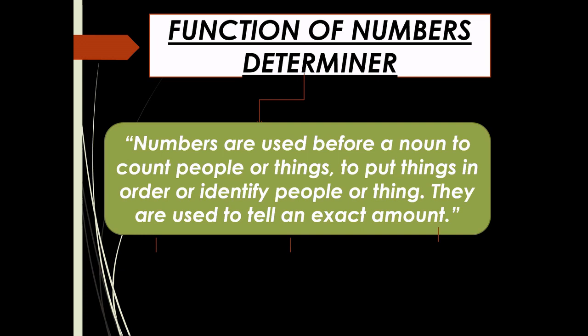Numbers are used before a noun to count people or things, to put things in order or identify people or things. They are used to tell an exact amount, or we can say a word or symbol that indicates a quantity, or a group of numbers used to identify something or somebody.